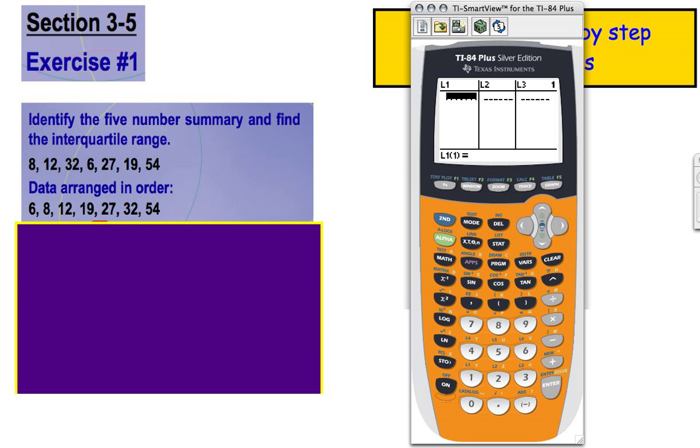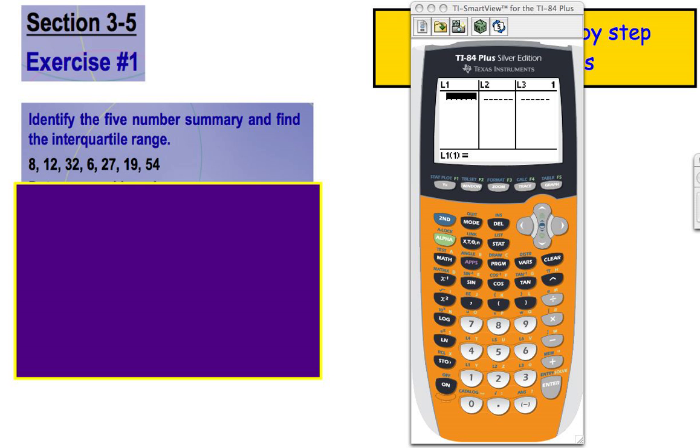So our data for L1 is 8, enter, 12, enter, 32, enter, 6, enter, 27, enter, 19, enter, 54, enter. So now we have our data into L1.